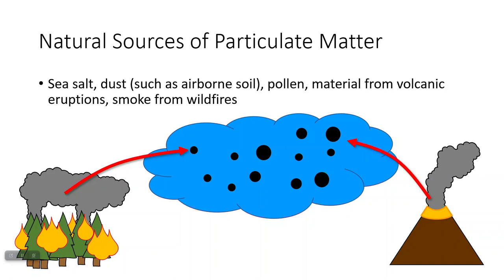Particulate matter has some similar sources — for example, it is also released from volcanic eruptions, but it's got a couple of other sources. Particulate matter is just particles in the air. Most of the time they're going to be too small to see. If you get a high enough concentration of them, you get smoke, like from wildfires, or dust, like if you have soil eroding and it gets blown in the air. Even sea salts carried away in ocean waters that evaporate, or left behind by evaporation on the shore of an ocean. All of these things will put particles into the air.